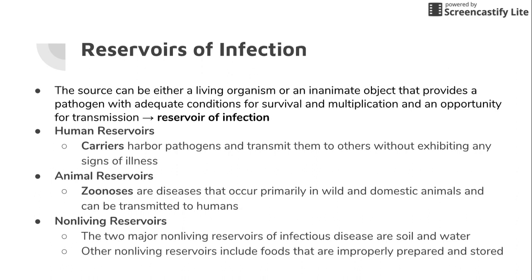AIDS is a major example of this. When you first contract HIV, you're sick for about a week to two weeks, like you have the flu, and you're very contagious right after that point. But then those symptoms resolve, and you can have the HIV infection for years before developing full-blown AIDS — and be transmitting it to others without even knowing you have it. Diphtheria, typhoid fever, hepatitis, and gonorrhea work the same way — sometimes you don't know you have them.